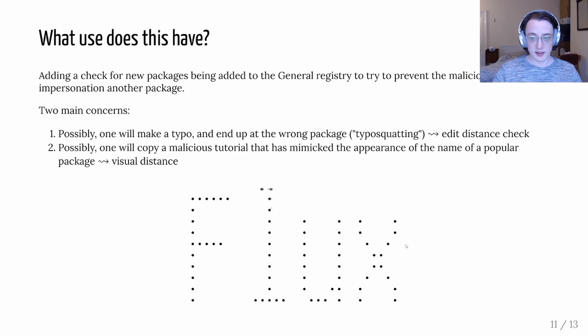And another way that someone might install the wrong package is they could copy a malicious tutorial. For example there could be a flux tutorial that this person who's made this malicious package writes and they could insert their package name maybe fiux. You can see this little gif they're pretty close fiux and flux. And so to check for that we might need a visual distance.